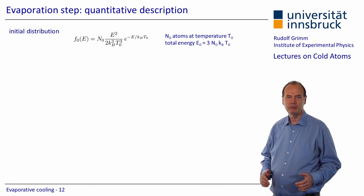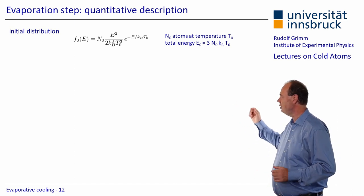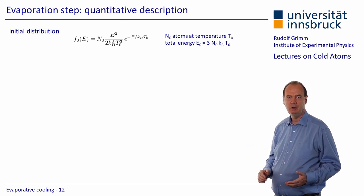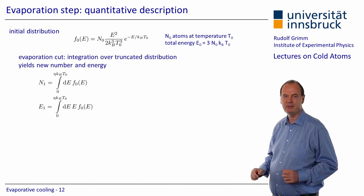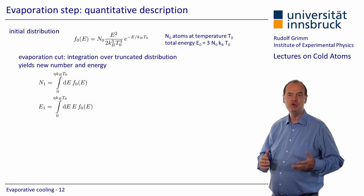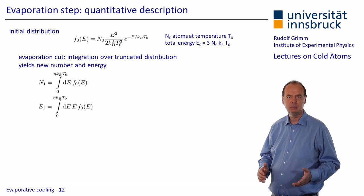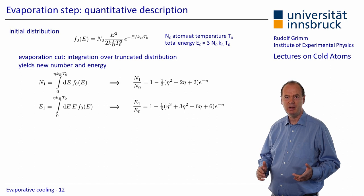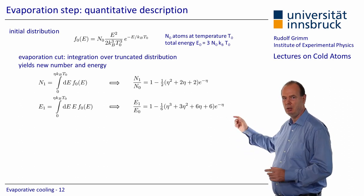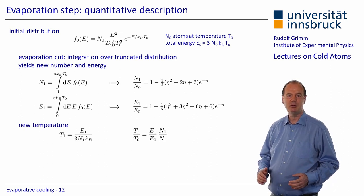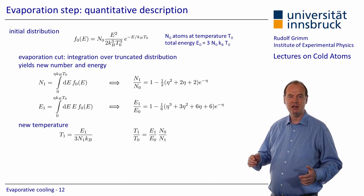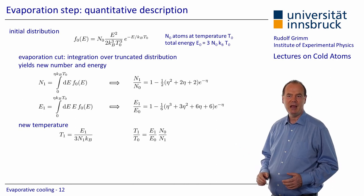Now let's have a look at the corresponding equations. Here is the initial distribution of N0 atoms at a temperature T0. The gas has a total energy E0 equals 3 times N0 times k_B times T0. Integrating over the truncated distribution gives us the new number N1 and new energy E1 after the cut, relative to the initial number N0 and energy E0. This can be expressed as functions of the truncation parameter, which we see here. The new temperature T1 after re-thermalization can be easily calculated from E1, and we can express the relative change of the temperature from the relative changes of energy and atom number.